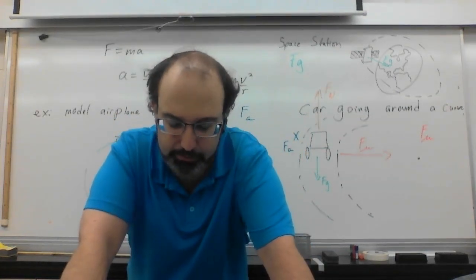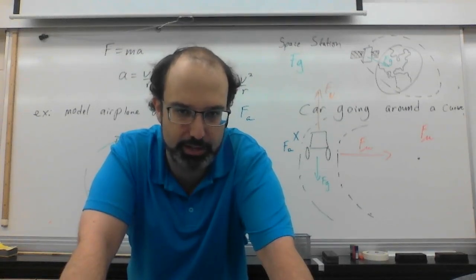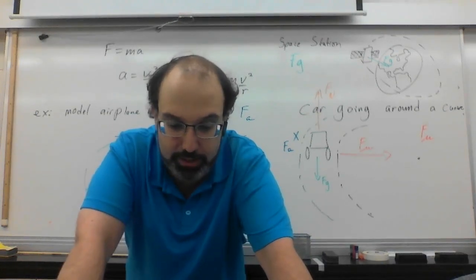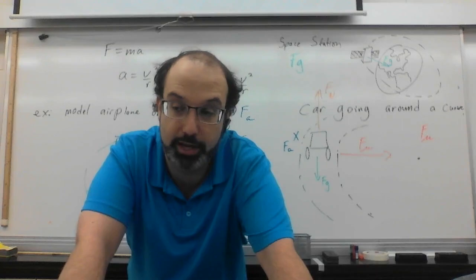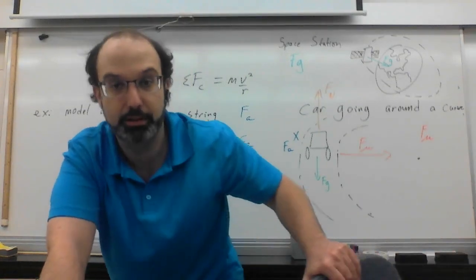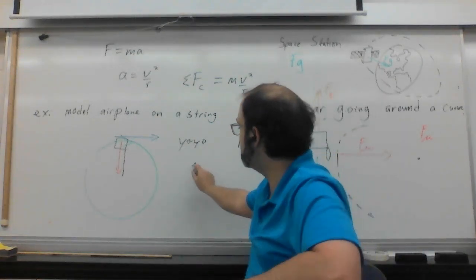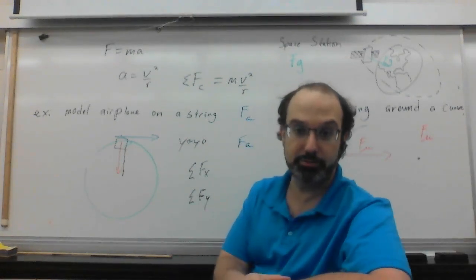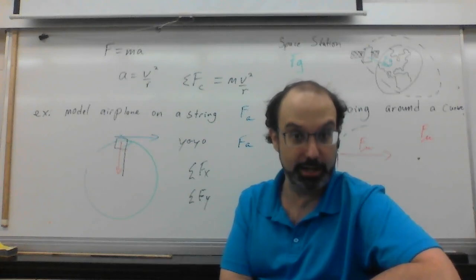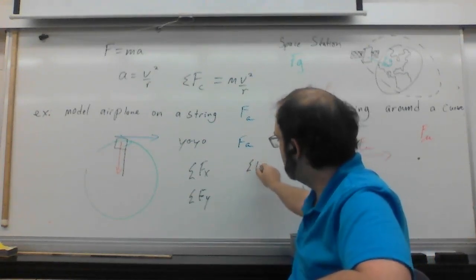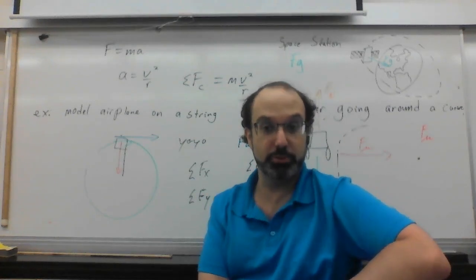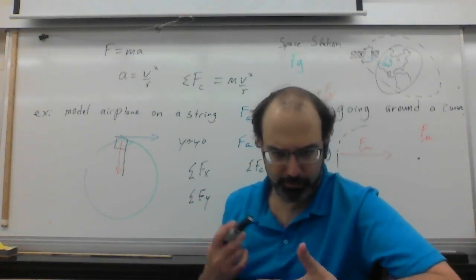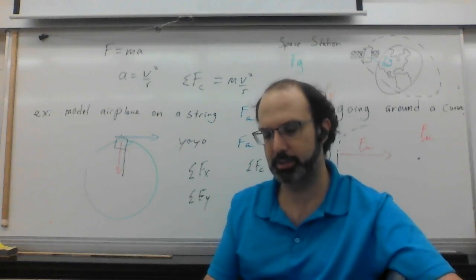In different times, ways, and places, different forces will cause an object to move in a circle. The reason we consider sigma Fc is the same reason we've used sigma before — sigma Fx and sigma Fy were sums of forces in each direction. Sigma Fc is just us saying we add together all the forces involved in the circular direction. Hopefully this is making sense. Let's do some examples from the notes.